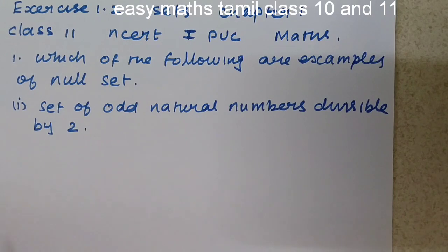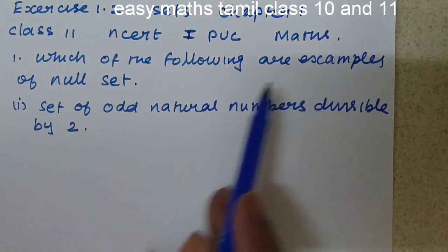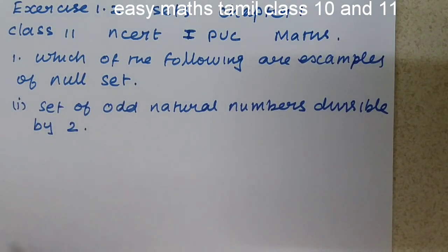Now let us solve the problem. Which of the following are examples of null set? What is a null set? A set which does not contain any element is called null set.